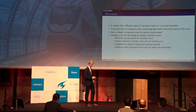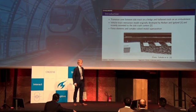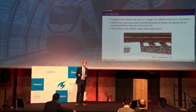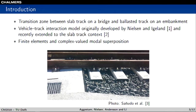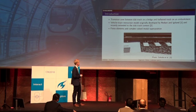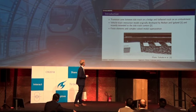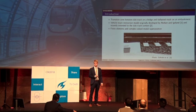As a brief introduction: the transition zone between slab track on a bridge and ballasted track on an embankment is what we will analyze in this paper. The vehicle-track interaction model we are using to simulate this was originally developed by Nielsen and Igerland, and recently extended to the slab track context. It is based on finite element models and a complex-valued moving-position technique to reduce the computational costs.